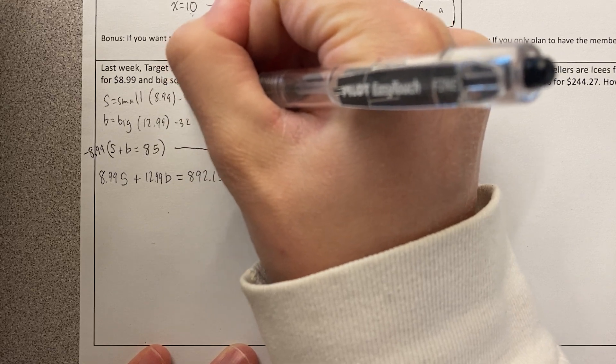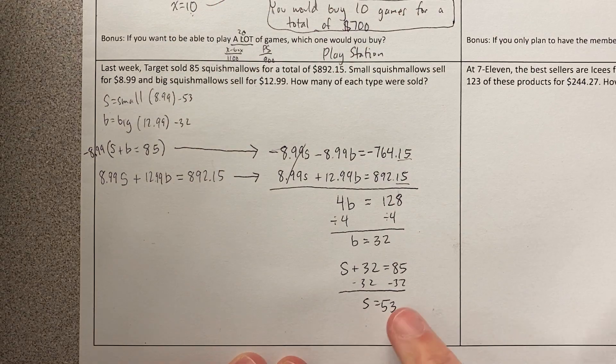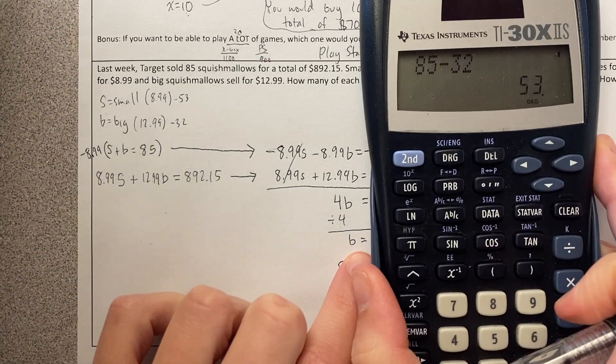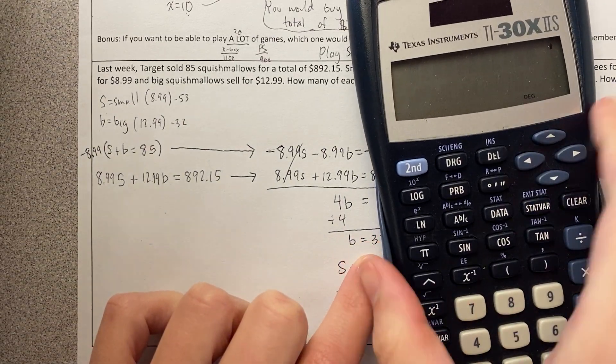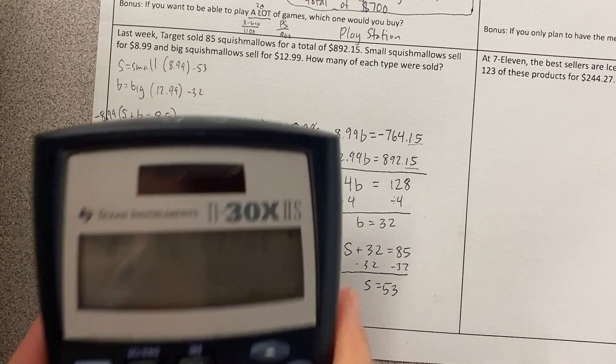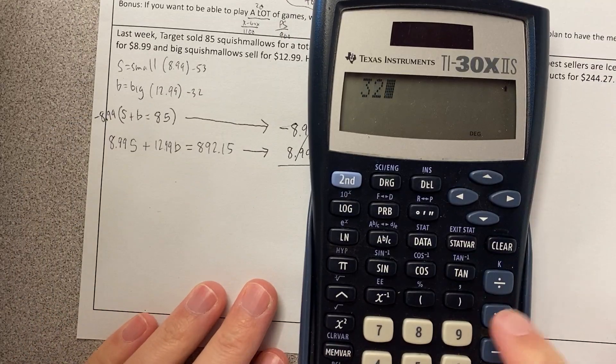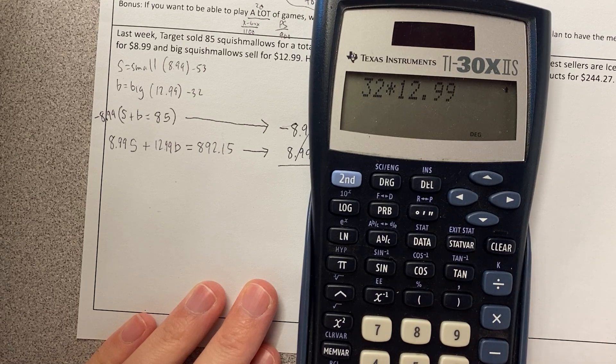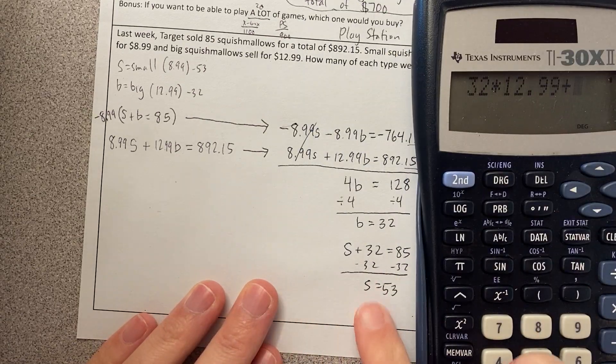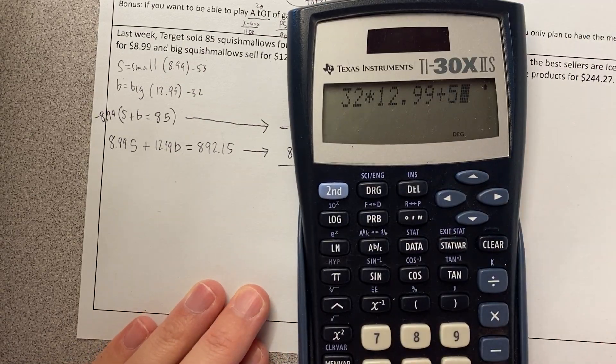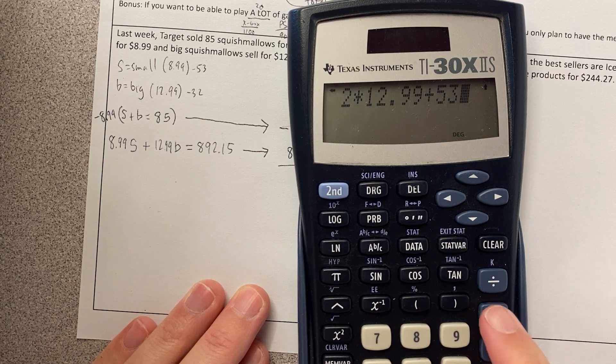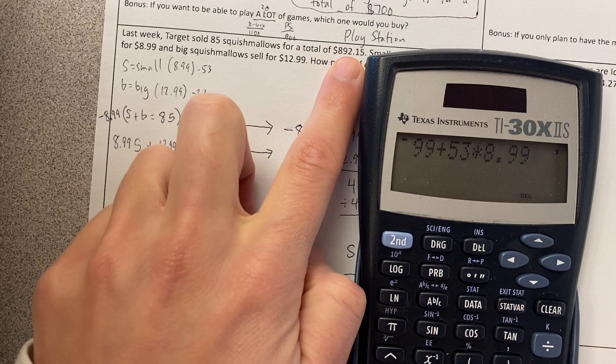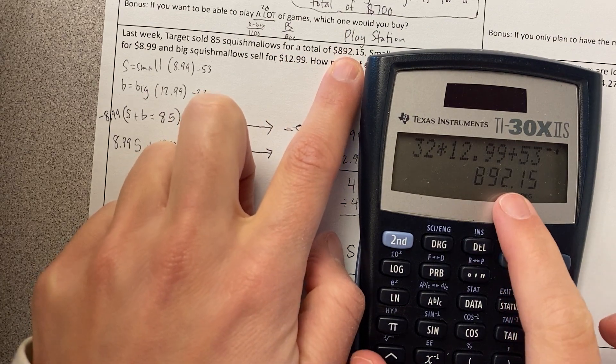Okay. Now, before I write my sentence, let's just check my answer. I can see 53 plus 32 does add to 85. And then let's just check the total. So if it's big Squishmallows, I'm going to have 32 of them. 32 times 12.99. And look, I'm going to put it in all at once. Plus, so that's the big Squishmallows. Plus, I'm going to buy 53 small Squishmallows times 8.99. And what I'm hoping when I press equals is that I get this number here. And I do.